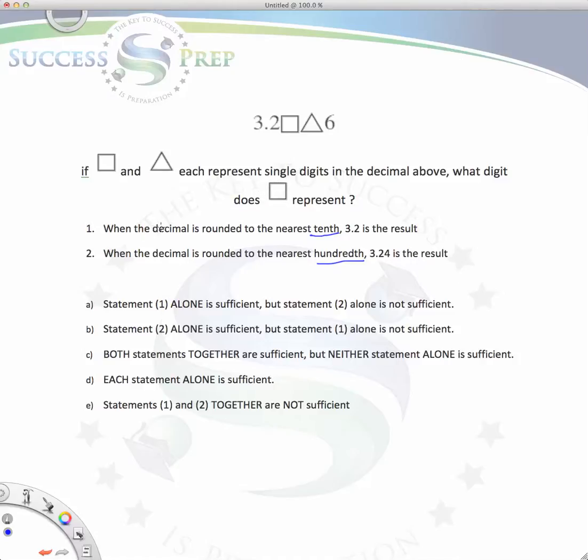With the data sufficiency part of the GMAT, you need to be able to look at the first statement to see if it's helpful. So let's take a look at that. When the decimal is rounded to the nearest tenth, 3.2 is the result.